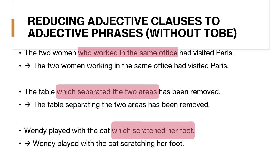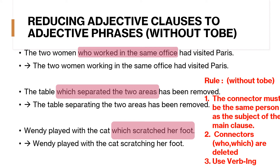Reducing adjective clauses to adjective phrases without 'to be.' Example 1: 'The two women who worked in the same office had visited Paris' becomes 'The two women working in the same office had visited Paris.' Example 2: 'The table which separated the two areas has been removed' becomes 'The table separating the two areas has been removed.' Example 3: 'Wendy played with the cat which scratched her foot' becomes 'Wendy played with the cat scratching her foot.' We confirm the rules: same subject, delete 'who'/'which,' and use the verb -ing form.